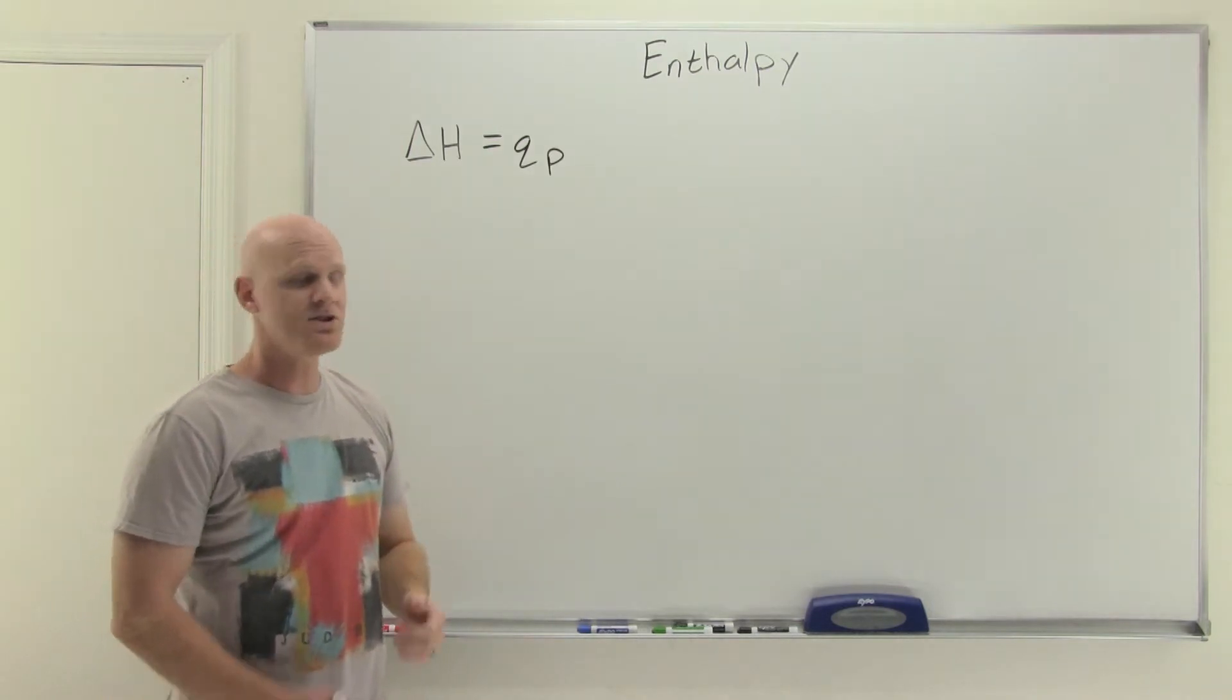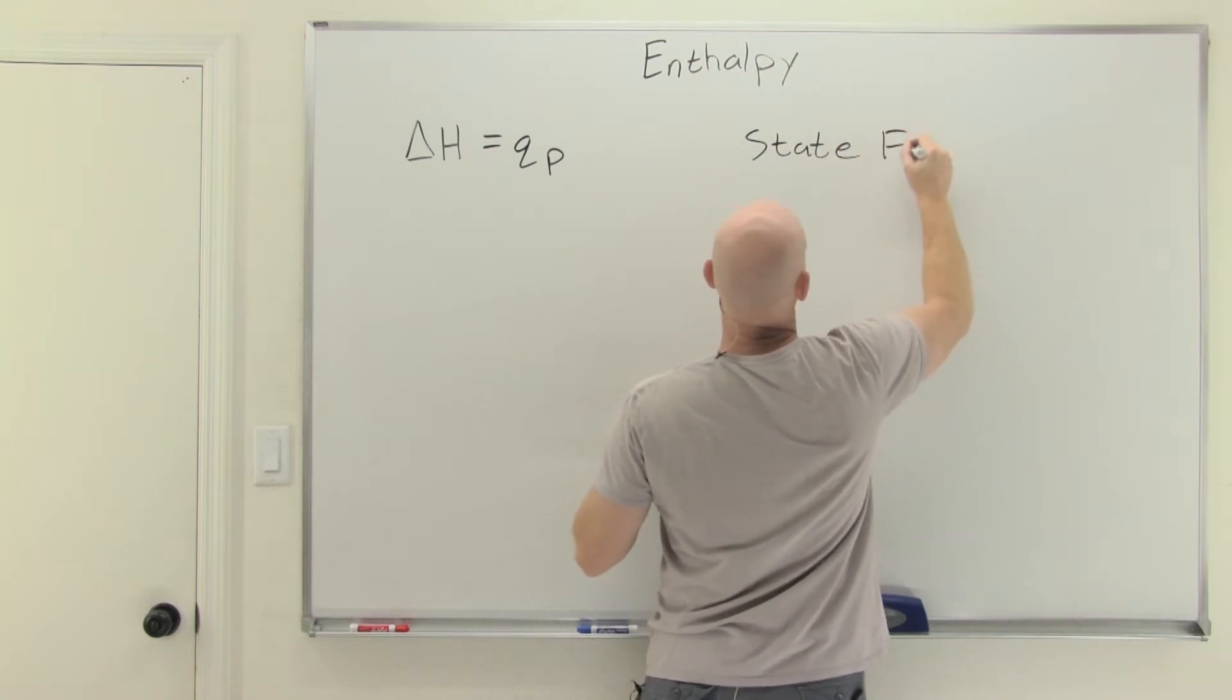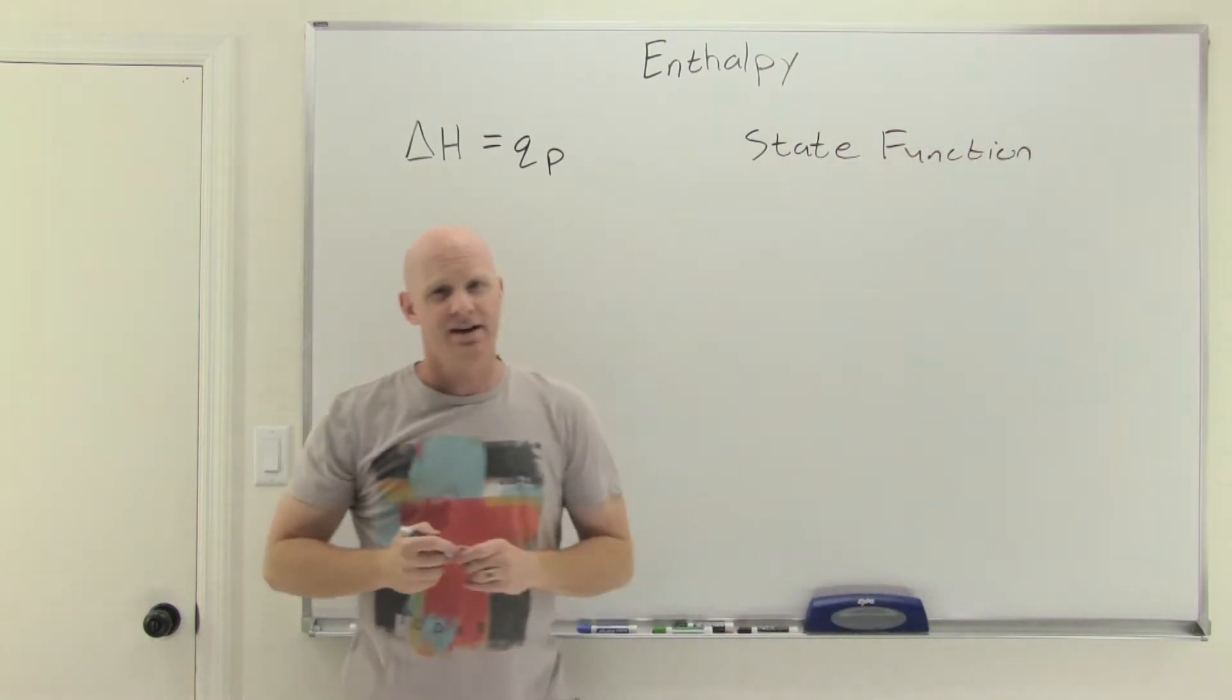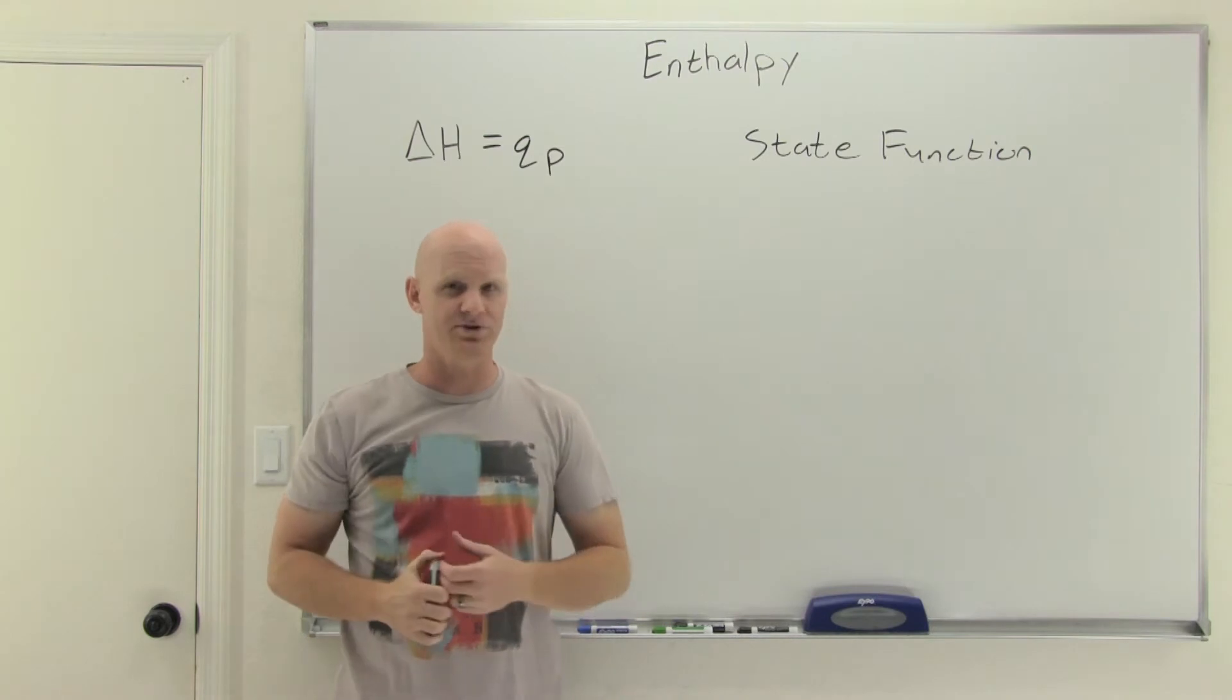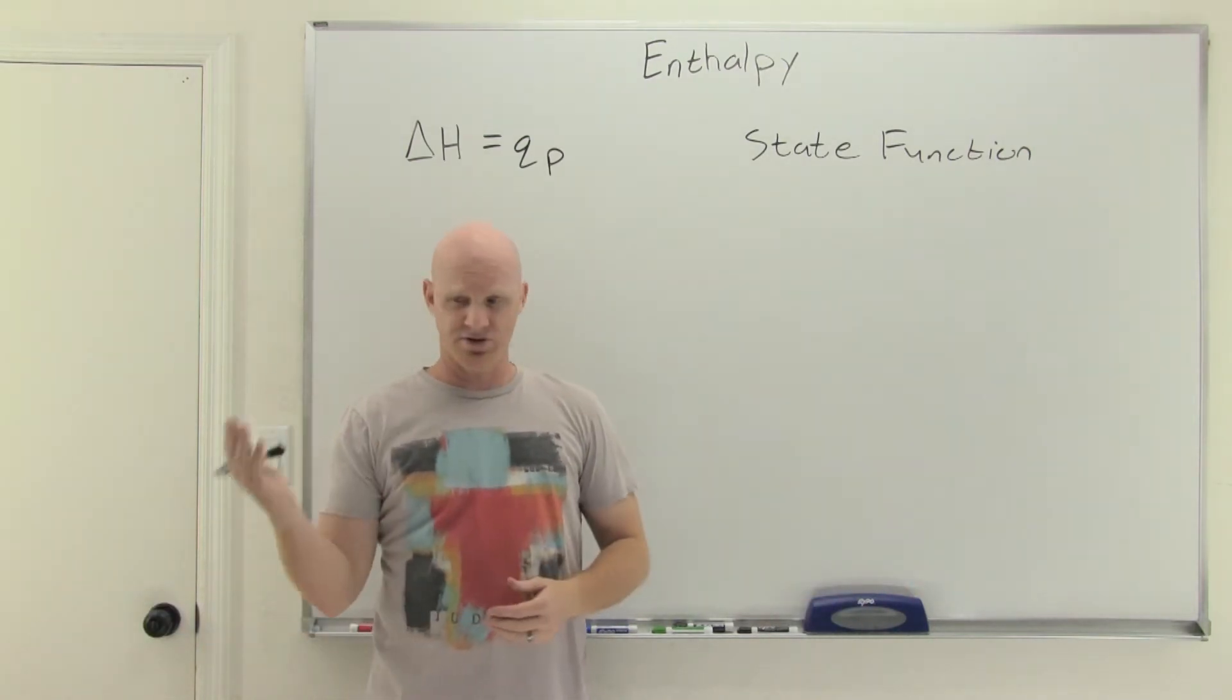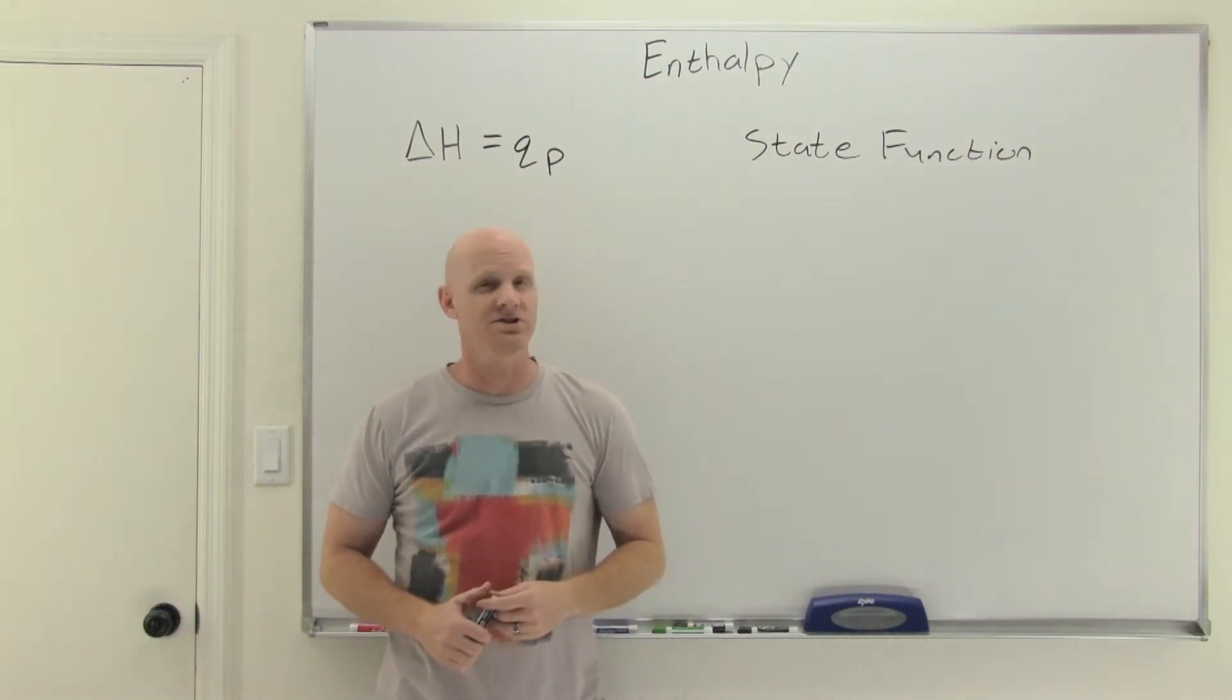One thing you should know is that enthalpy change is an example of what we call a state function. A state function is one that depends only on the initial state and the final state of your system. That's all you need to know. As long as you start here and end here, the enthalpy change would be known for sure. That's an example of a state function.